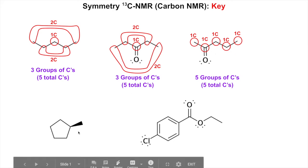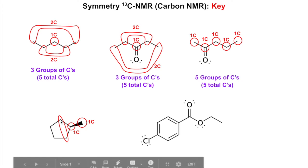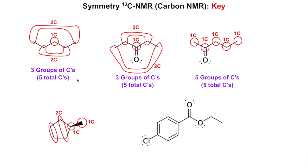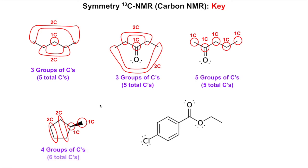Now the one that was so difficult in proton NMR — methylcyclopentane. There's one carbon signal for the methyl group, and another one-carbon signal for the methine carbon. Then these two ring carbons adjacent to it are equivalent — a two-carbon signal — and these two further carbons are also equivalent — another two-carbon signal, because they're equal distance from the methyl group. So this one's easier: four groups of carbons out of a total of six carbons.